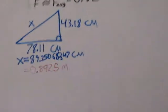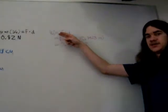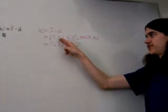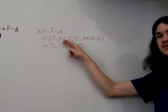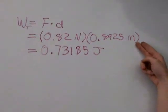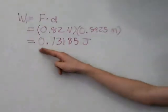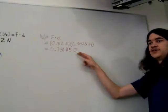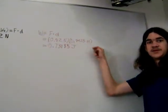So, over here, we are solving for the work of tension. So, times the force, 0.82 Newtons, times displacement, 0.8925 meters. And we plugged that into calculators. It would be 0.73185 joules, where joule is a Newton times a meter.